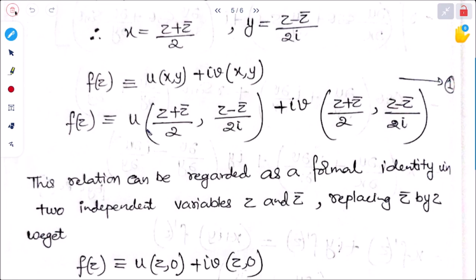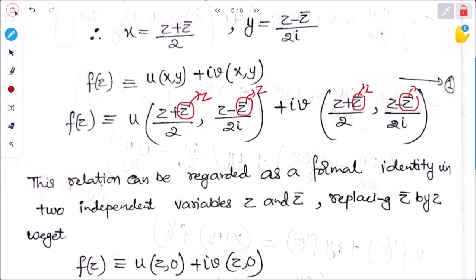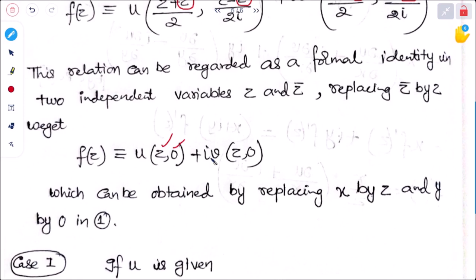Replacing z̄ by z in this identity: (z + z)/2 = z, and (z - z) = 0, so y becomes 0. This means every occurrence of z̄ is replaced by z, making y = 0. The result is equivalent to replacing x by z and y by 0 in the original function.